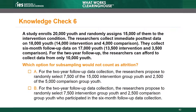For the 2-year follow-up data collection, Option A: the researchers propose to randomly select 7,500 of the 15,000 intervention group youth and 2,500 of the 5,000 comparison group youth. Option B: the researchers propose to randomly select 7,500 intervention group youth and 2,500 comparison group youth who participated in the 6-month follow-up data collection.